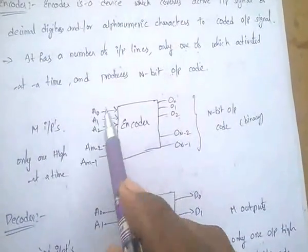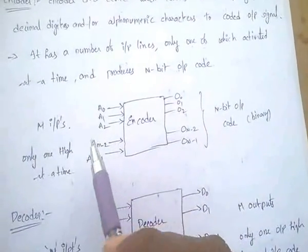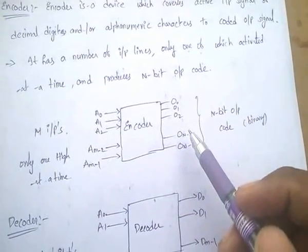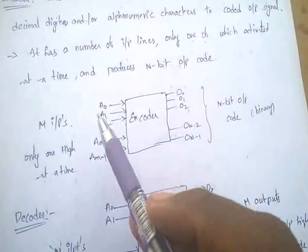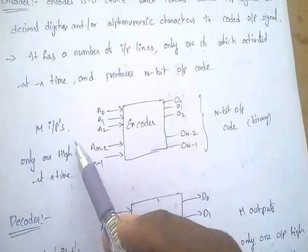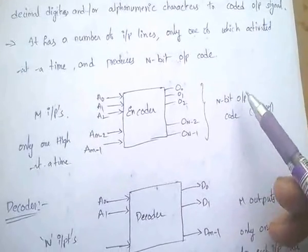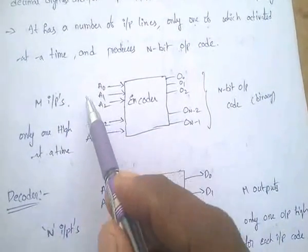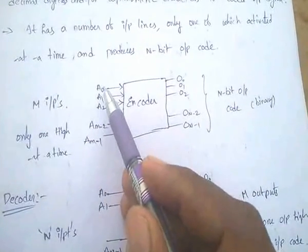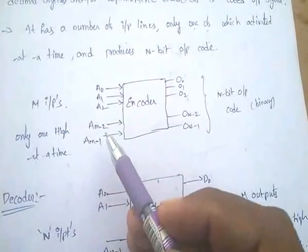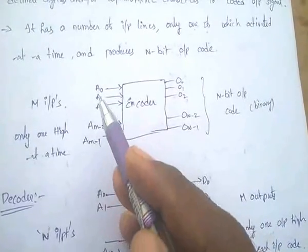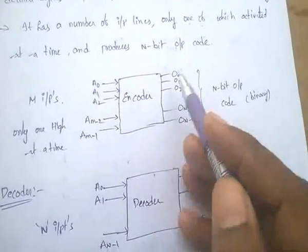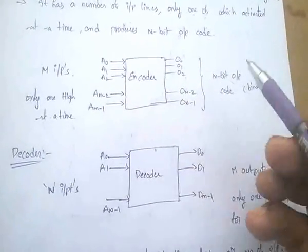An encoder has m input lines and n output lines. Using m inputs, it gives an n-bit output code. Only one input is high at a time and it produces the output for that input in coded — that is binary — form.